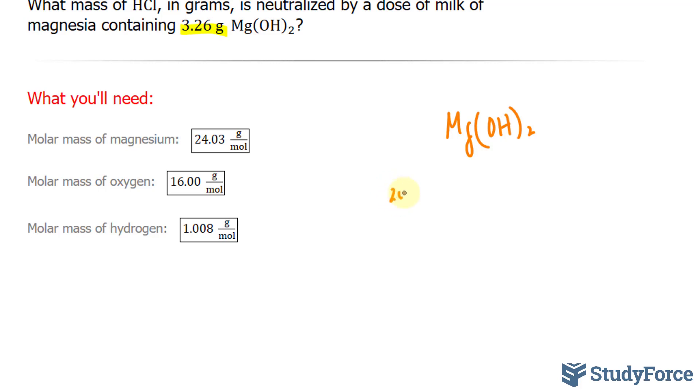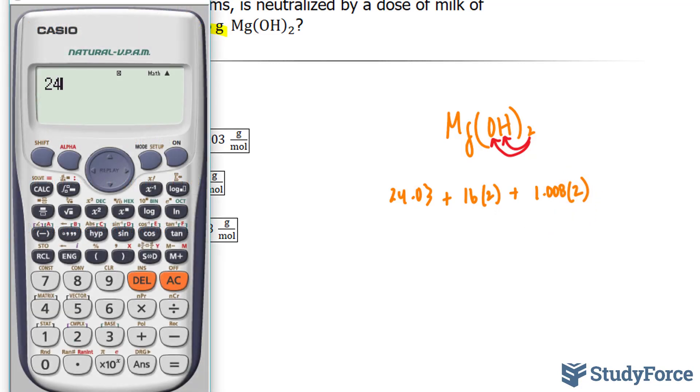We have 24.03 plus 16 times 2. The reason I'm multiplying by 2 is because of this subscript. Pretend we're distributing this subscript to both of these atoms, plus 1.008, multiply by 2 as well. We have 24.03 plus 32, that's 16 times 2, plus 1.008 times 2.